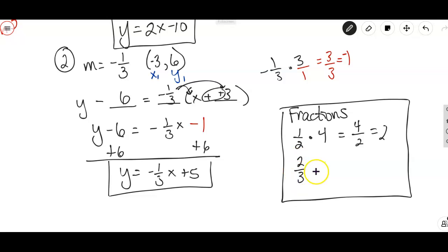About 2/3 times 6. Two times 6 is 12, divided by 3 is 4. Let's do -3/4 times 8. Negative 3 times 8 is -24, divided by 4 is -6. So you just do top times top divided by what's ever on the bottom.